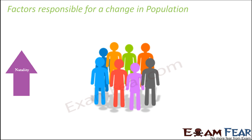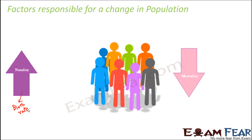Those critical factors are natality and mortality. Natality is nothing but the birth rate — the number of individuals which are being born. Any new individual born is going to add to the population, so this is going to increase the population. Similarly, mortality is nothing but the death rate. The number of individuals which die would reduce the population, so this is going to decrease the population.